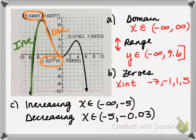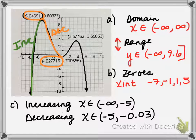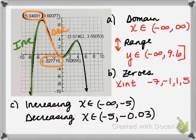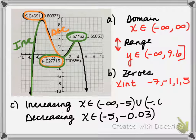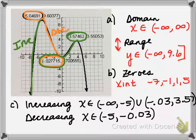Continuing from left to right, for the next portion of the graph, the y values are getting larger — so now we're increasing again. So increasing from negative 0.03 to about 3.57. We'll union this with the next interval: negative 0.03 to about 3.57, or 3.6 if you round.